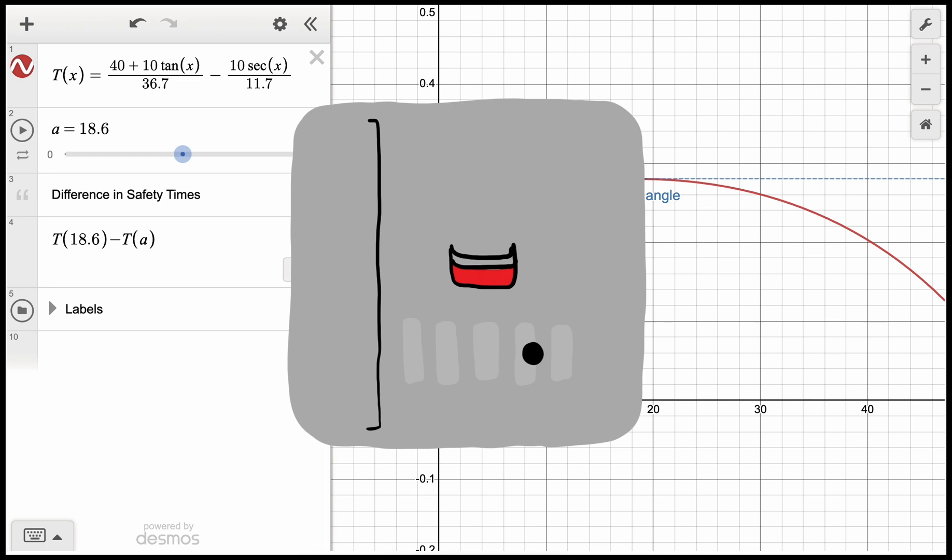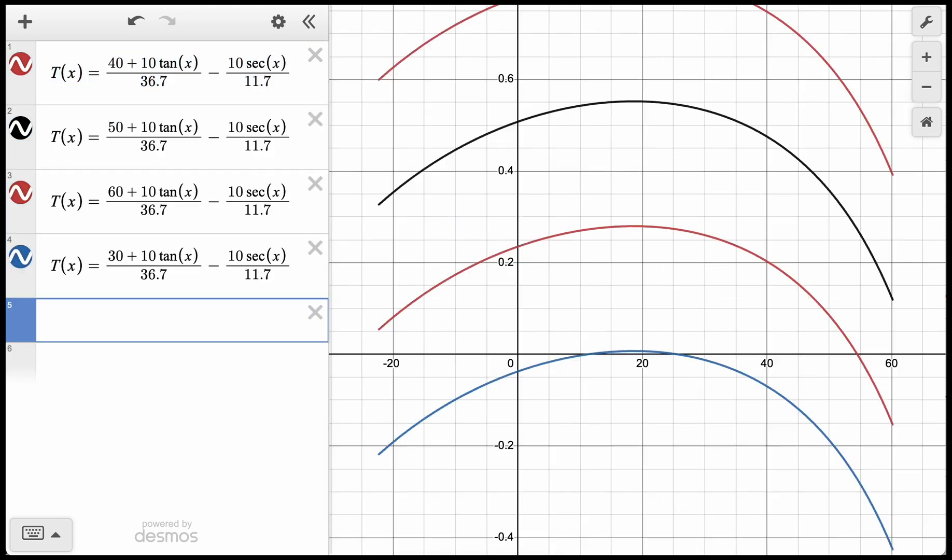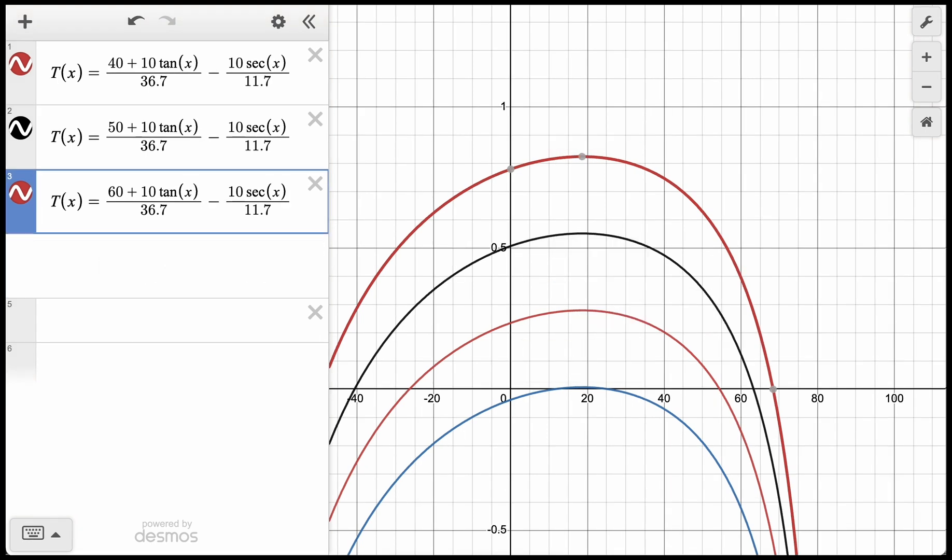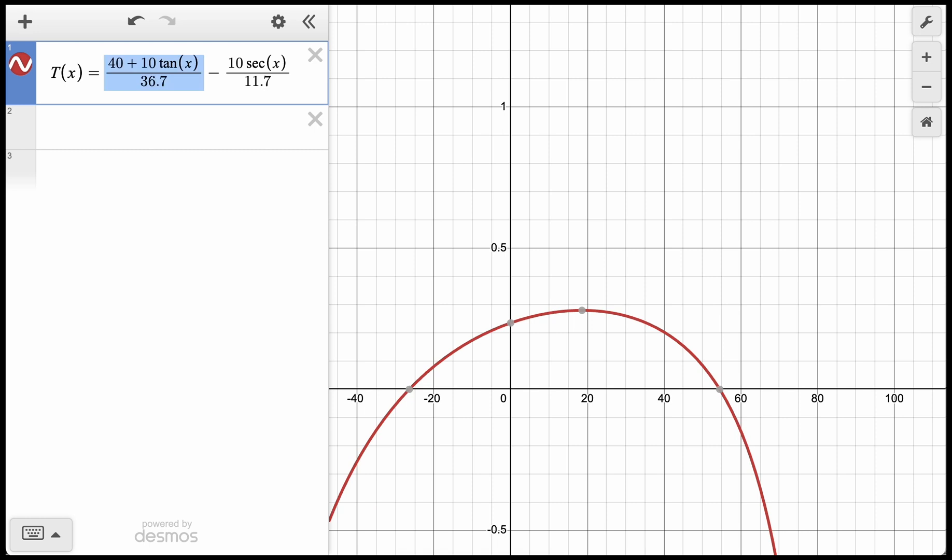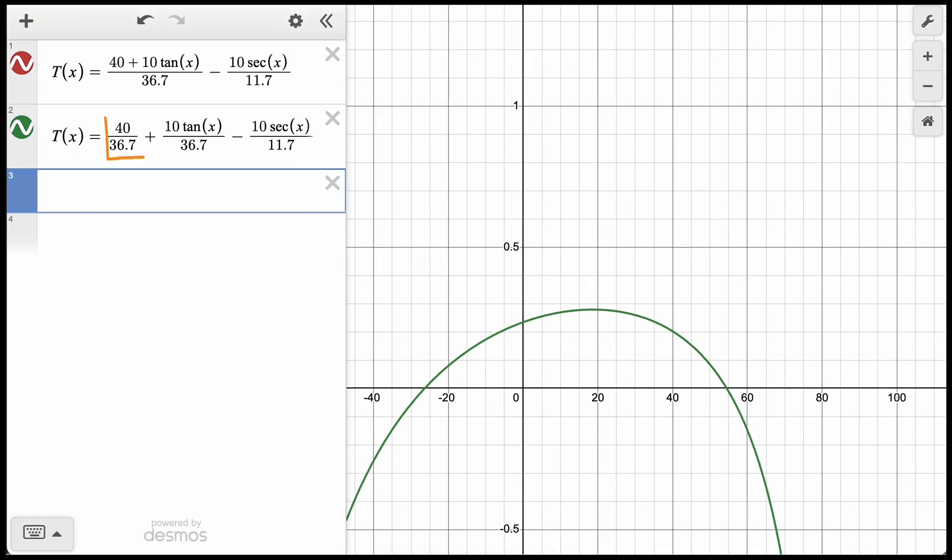Does the distance that the truck is away from Sarah at the start change the optimal angle? We can test this by changing the value of the distance in our function. We first assumed it was 40 feet, but what if it was 50 or 60 or 30? Notice as this value changes, the angle that gives Sarah the most time is still the same. This value seems to be shifting the curve up or down. There's another way to see this. We can manipulate the expression by rewriting this first term here as two terms. Now we can see that as we change the value of 40, we're just changing the value of a constant in the expression, which will just shift the curve up or down, and that will not change the x-coordinate of the optimal angle.